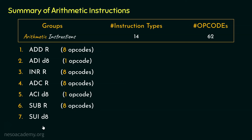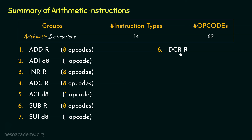Coming to the next instruction type, SUID8 — subtract immediate: this 8-bit data sent via the instruction itself is subtracted from the contents of the accumulator. For this we have only a single opcode. The 8th instruction type was DCRR. It performs the opposite of INRR — it decrements the content of R, which covers the accumulator, the GPRs, and the memory location. So for this instruction type, we have 8 different opcodes.